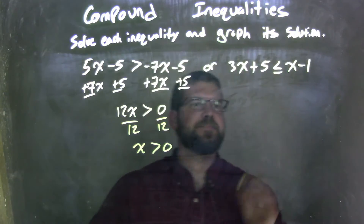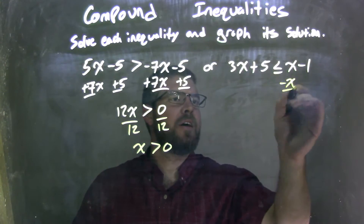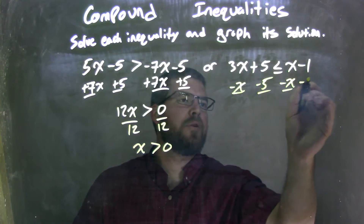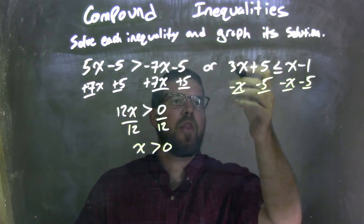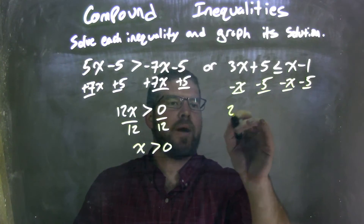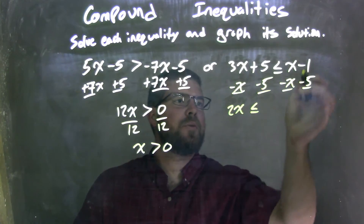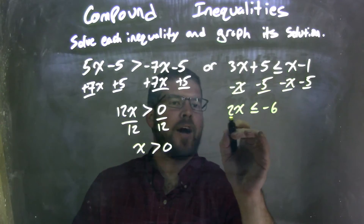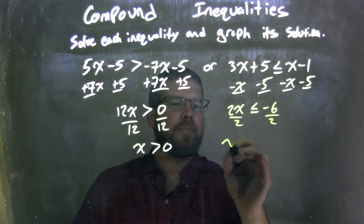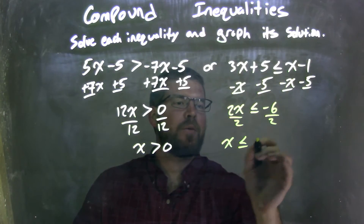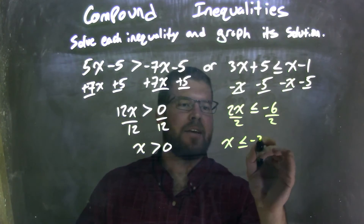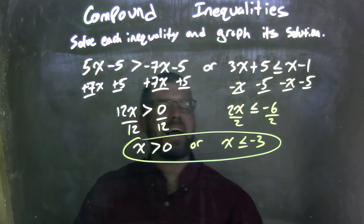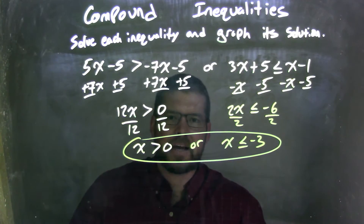Now I need to solve the one on the right. I'm going to subtract x from both sides, and subtract 5 from both sides. Bringing x's to the left and numbers to the right: 3x minus x is 2x, which is less than or equal to negative 1 minus 5, which is negative 6. I'll divide by 2 on both sides, leaving x by itself, less than or equal to negative 6 divided by 2, which is negative 3. Since it's an or statement, I have x is greater than 0 or x is less than or equal to negative 3.